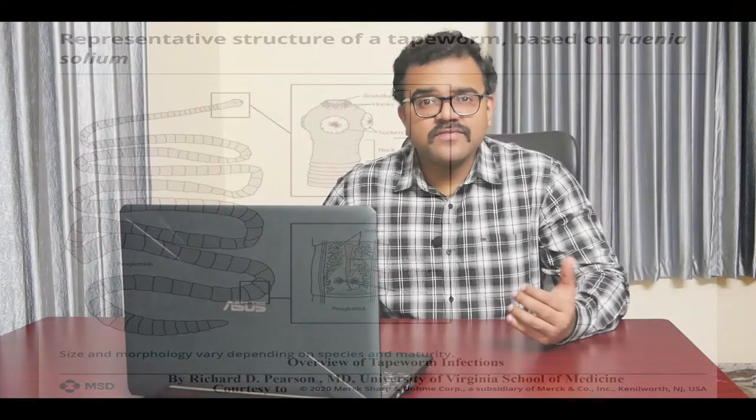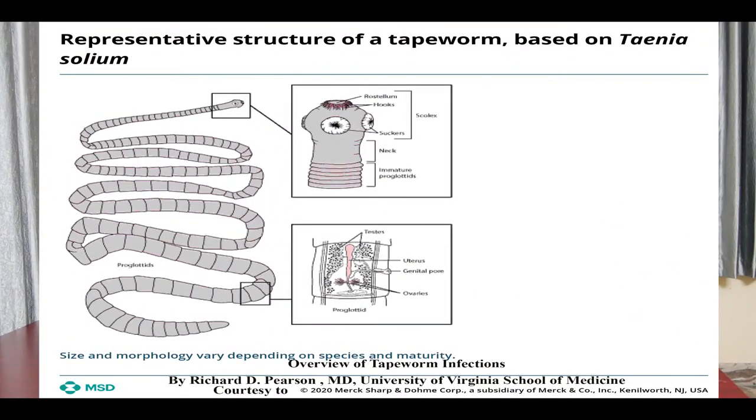The strobila forms the bulk of the body and consists of a chain of about a thousand segments or proglottids. The proglottids progressively increase in size towards the posterior extremity. Since the neck is the area of segmentation, the youngest proglottids are seen nearer to the neck while the older ones are found towards the terminus. The anterior proglottids are immature, broader than long, and devoid of reproductive organs.